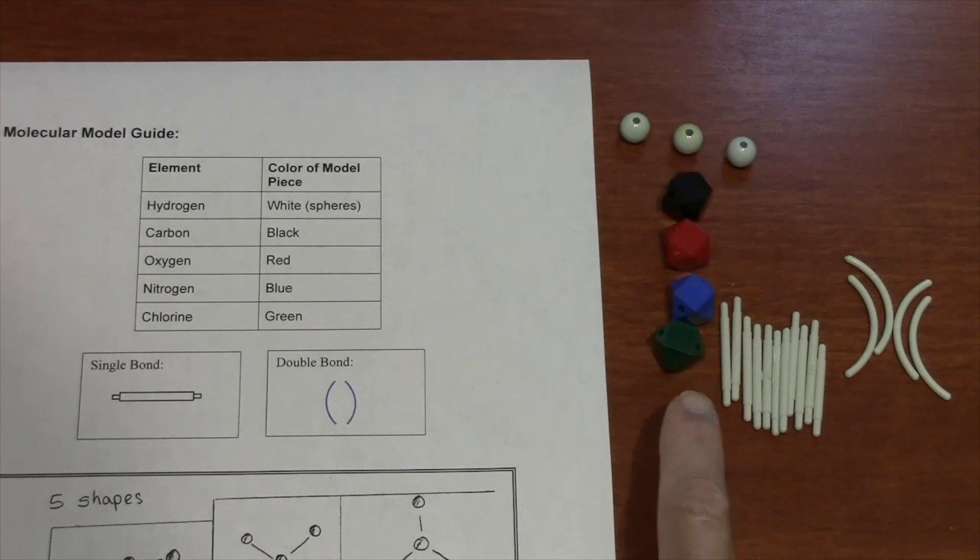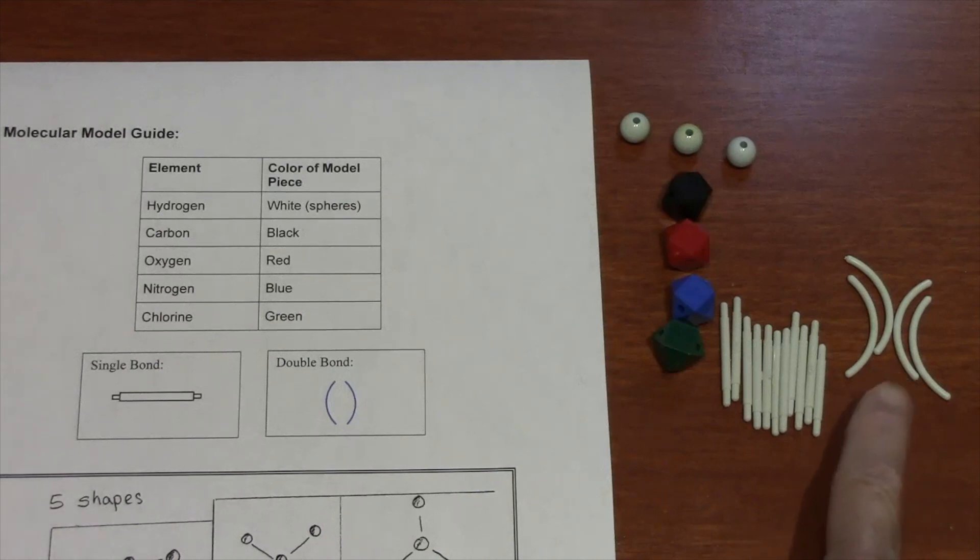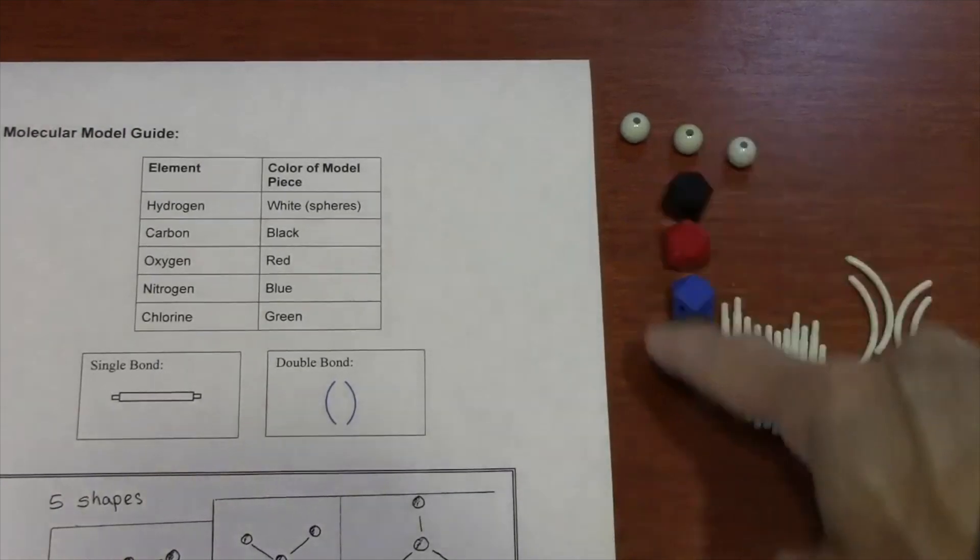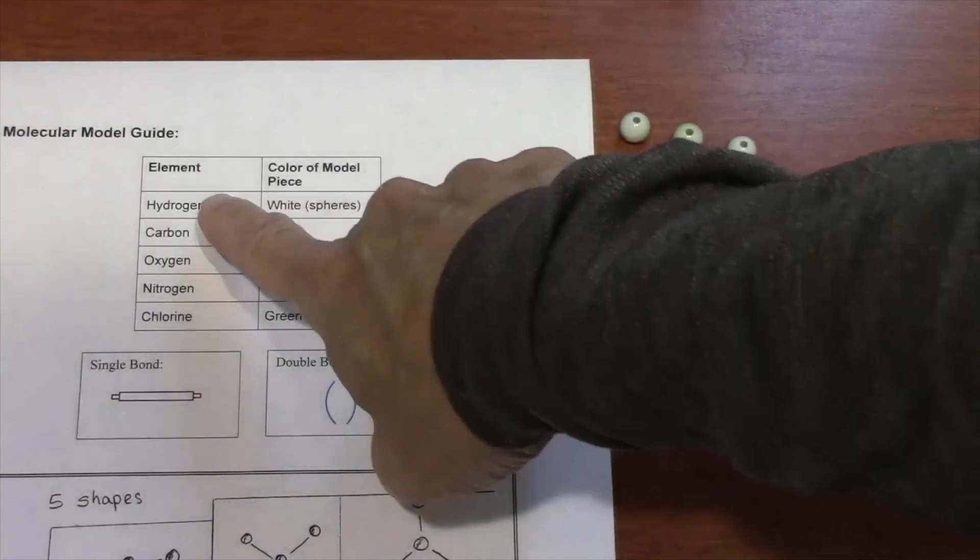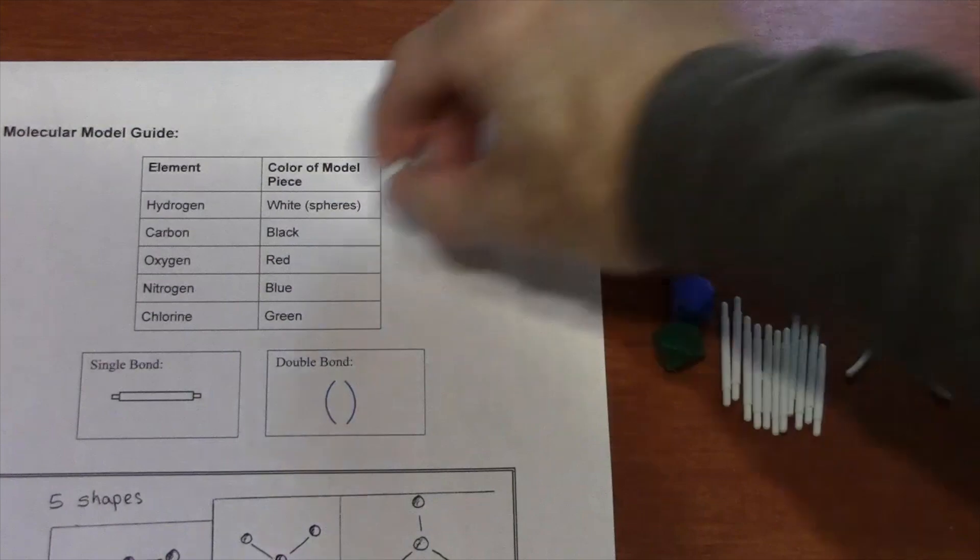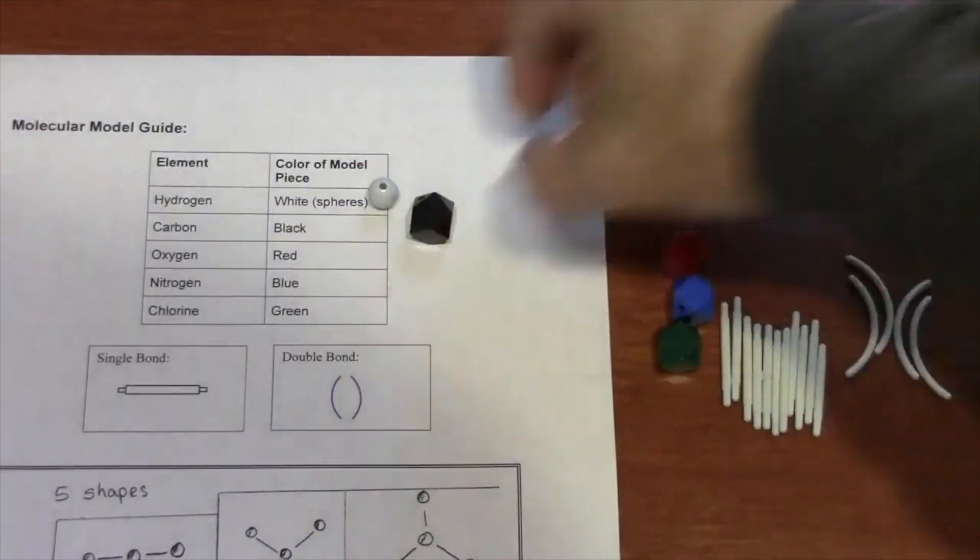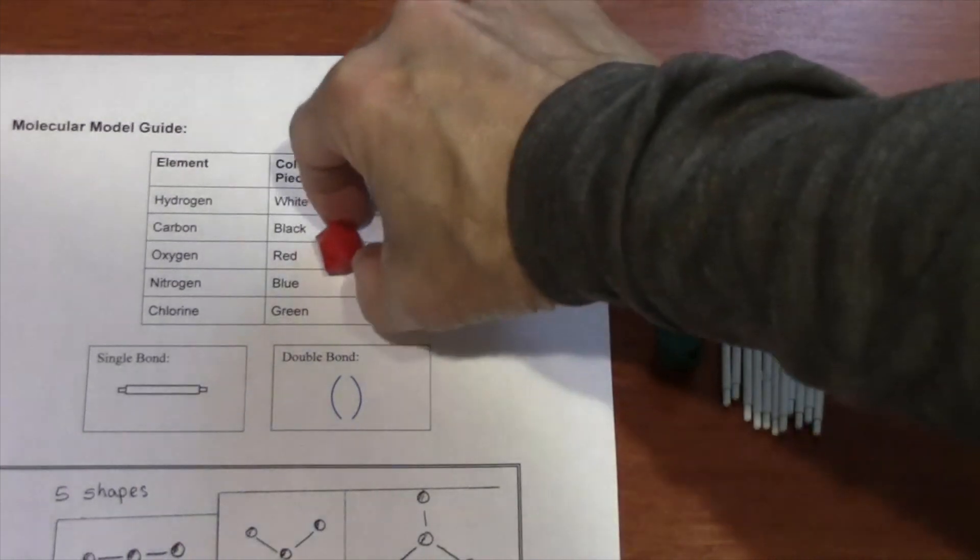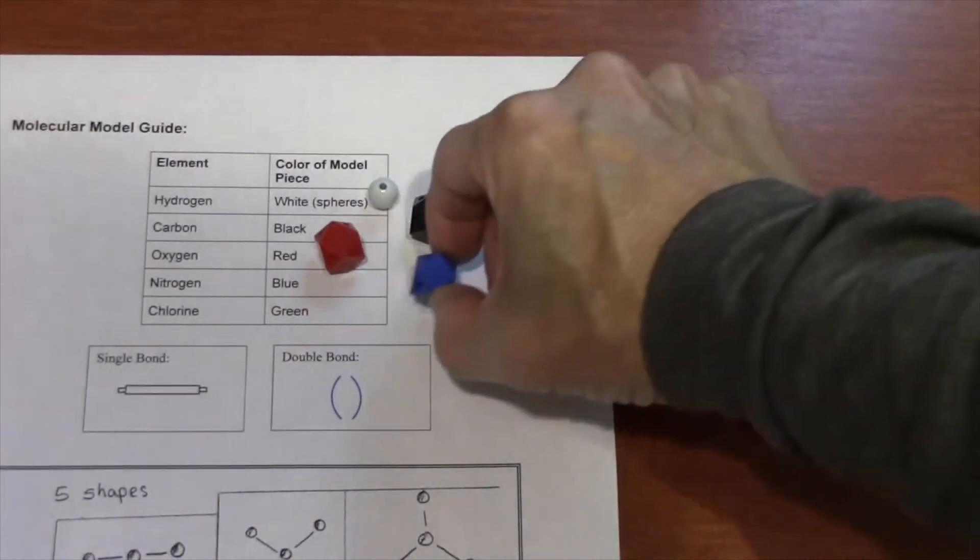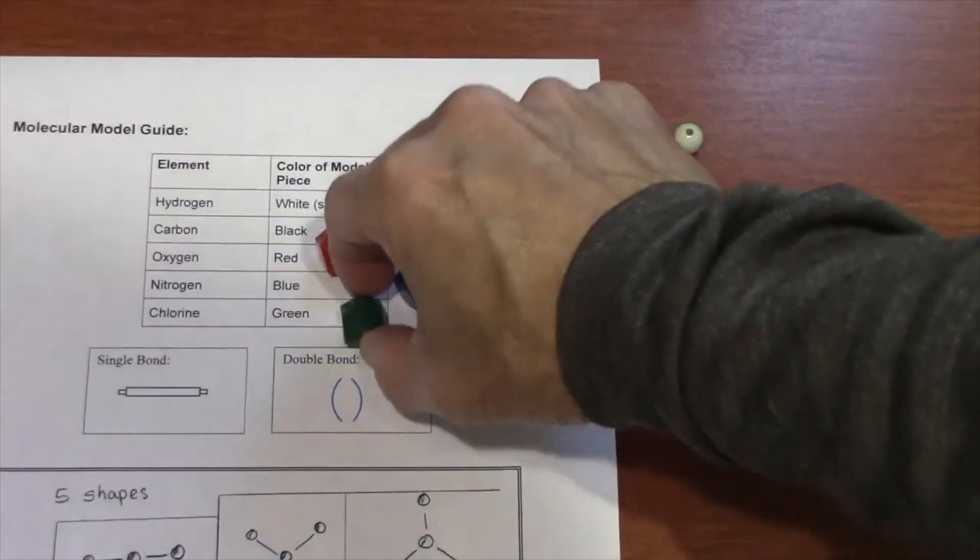Your molecular model kit will have different colored blocks as well as these pegs in two different styles. Your curved pegs may well be blue. That's fine. Each color block represents a different element. The hydrogen are the white spheres, carbon is black, oxygen is red, nitrogen blue, and chlorine green.